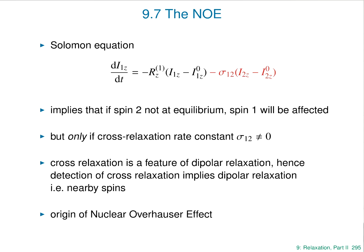The Solomon equation basically tells us how to do the experiment: perturb spin 2 away from equilibrium and see what happens to spin 1. If spin 1 doesn't change, sigma-1,2 is zero — no cross-relaxation and no nuclear Overhauser effect. But if spin 1 does change, there is cross-relaxation and a nuclear Overhauser effect.